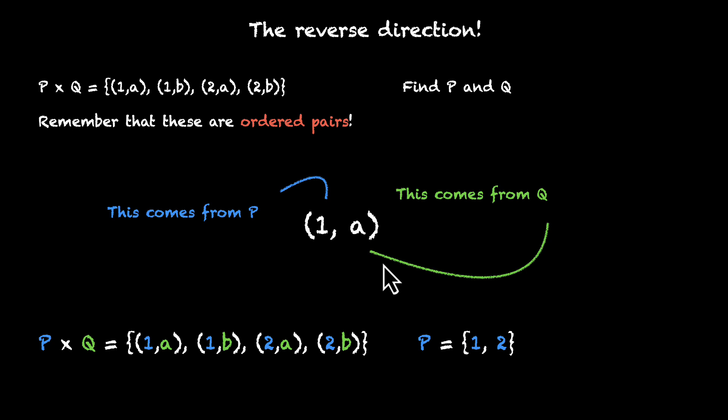Similarly, Q has to be {a, b} because there is nothing else as a second element in all of these ordered pairs. And this is how you get P and Q. And when you're writing P and Q, the order does not matter. P can be written as {1, 2} or {2, 1} because it's a set, it's not an ordered pair, it doesn't matter which one you pick first.